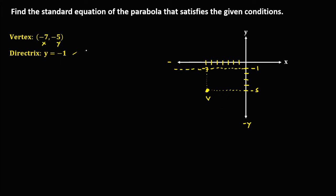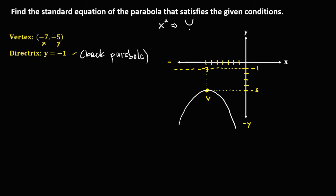To find the standard equation, if the equation of the parabola is x squared, the graph opens upward or downward. If it is y squared, the graph opens to the left or to the right. Since the graph opens downward, therefore the standard equation is x squared.